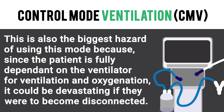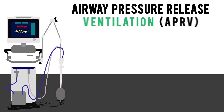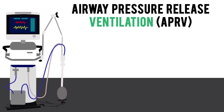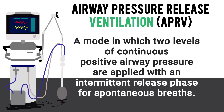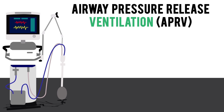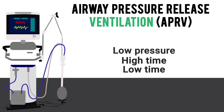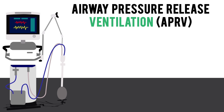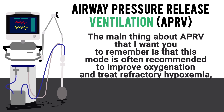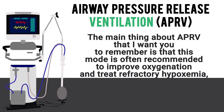Next we have APRV, or airway pressure release ventilation. This is a mode in which two levels of CPAP are applied with an intermittent release phase for spontaneous breaths. In this mode you will set a high pressure, low pressure, a high time, and a low time. We will go into much more detail in another video.